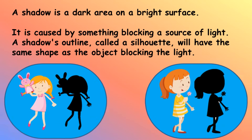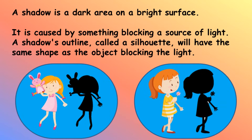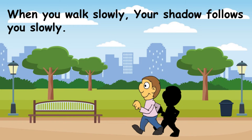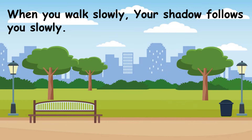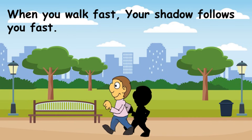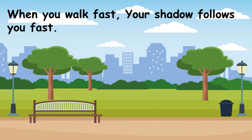A shadow is a dark area on a bright surface. It is caused by something blocking a light source. When you walk slowly, your shadow follows you slowly. When you walk fast, your shadow follows you fast.